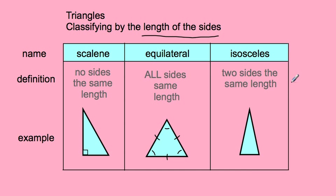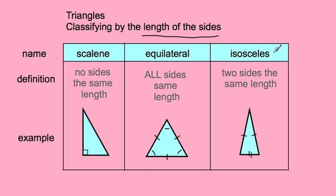The last type by sides is called an isosceles triangle. That's when you have two of the sides of your triangle being the same length. This side over here is the same length as that side, but it is not the same length as the bottom side. When you have two sides of the same length, you have an isosceles triangle.